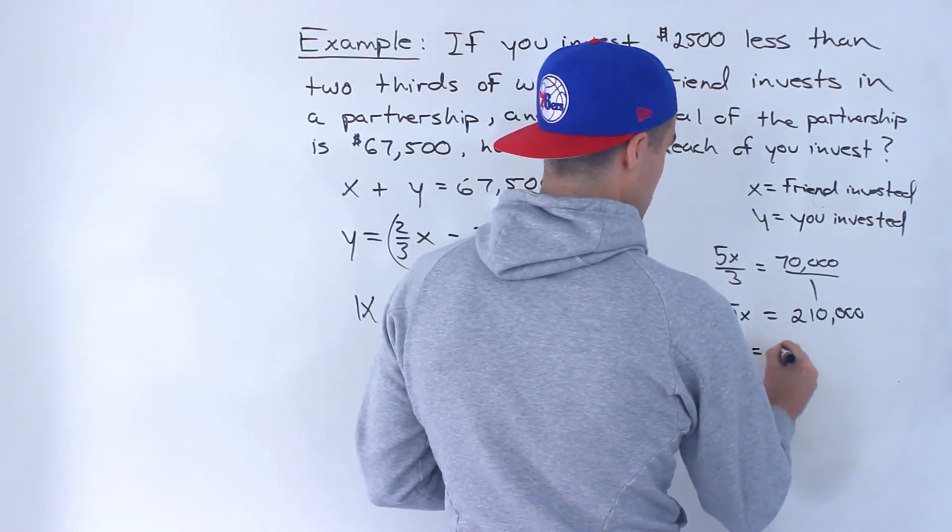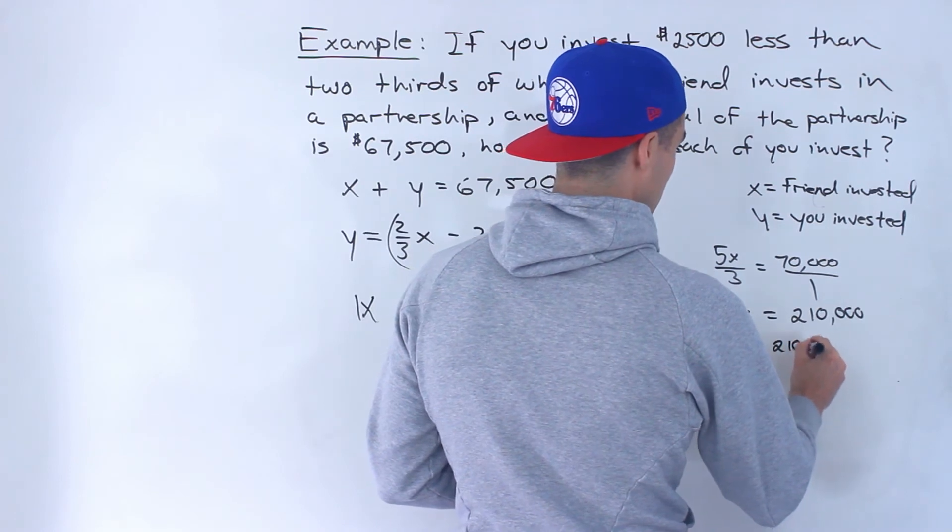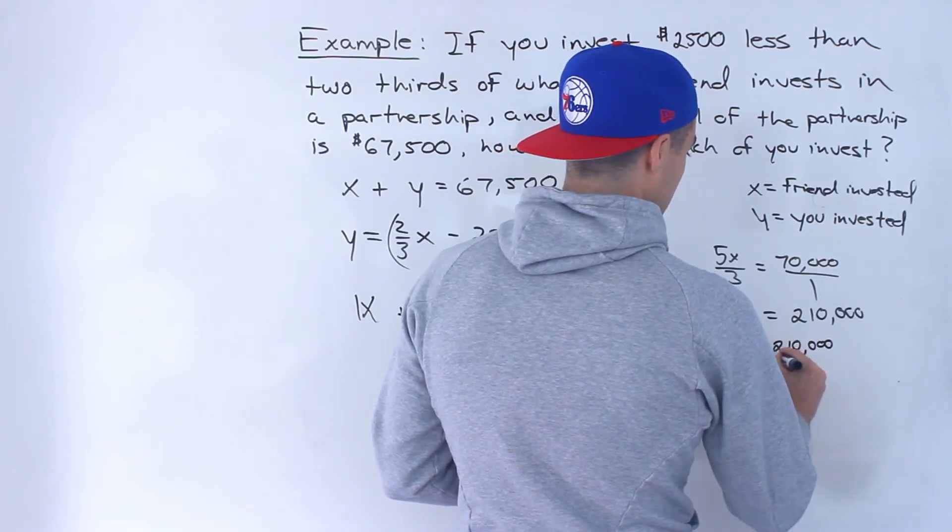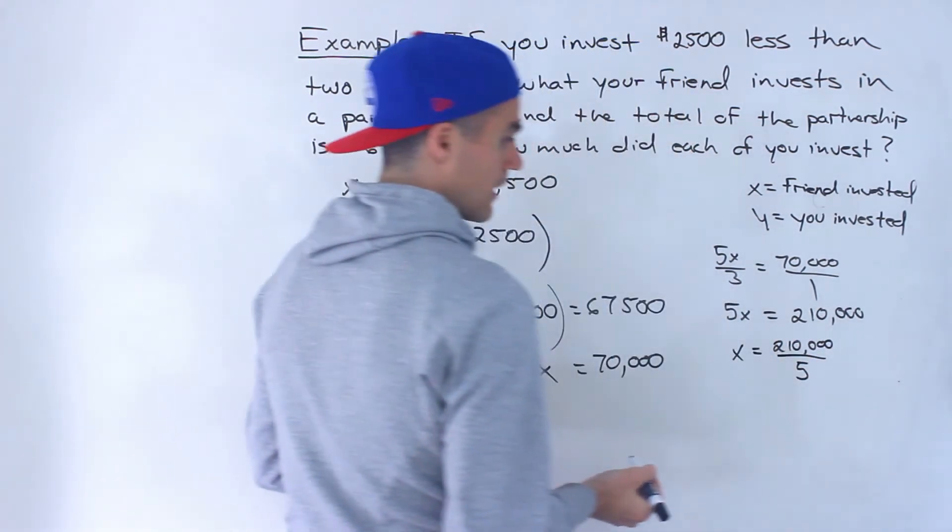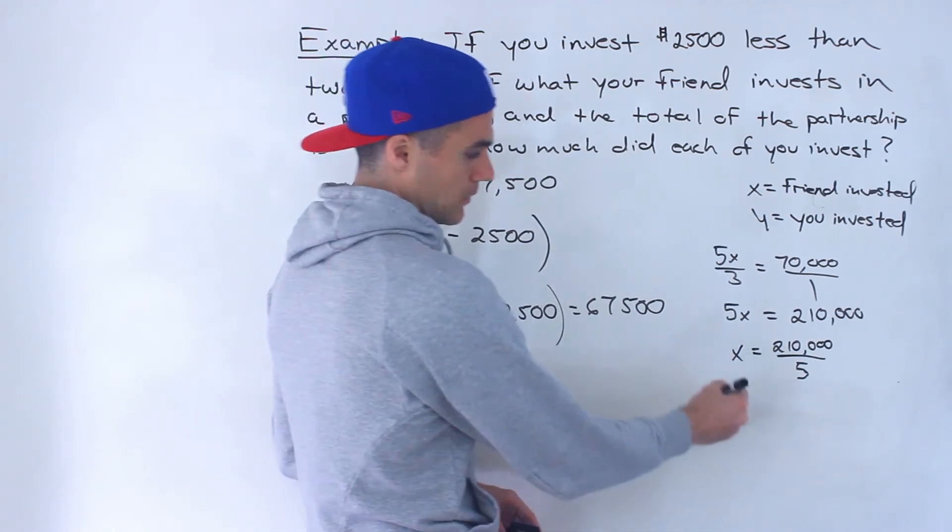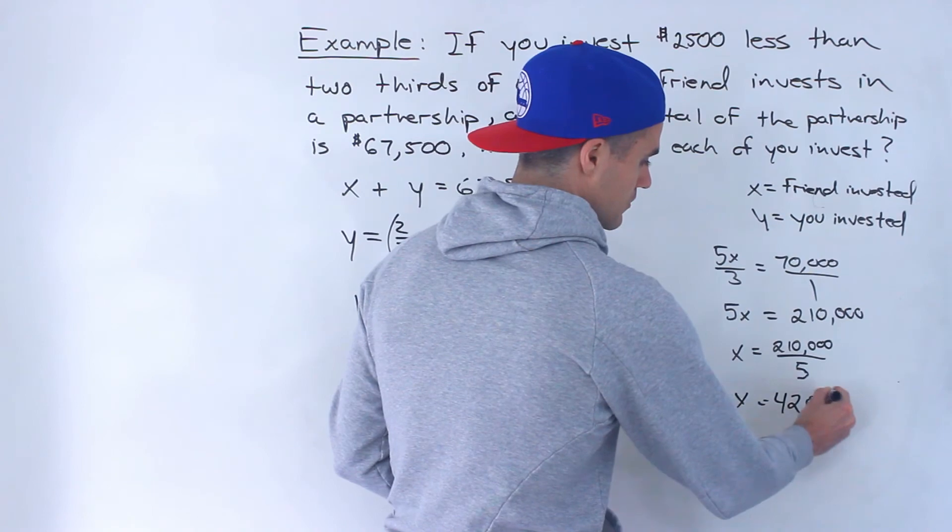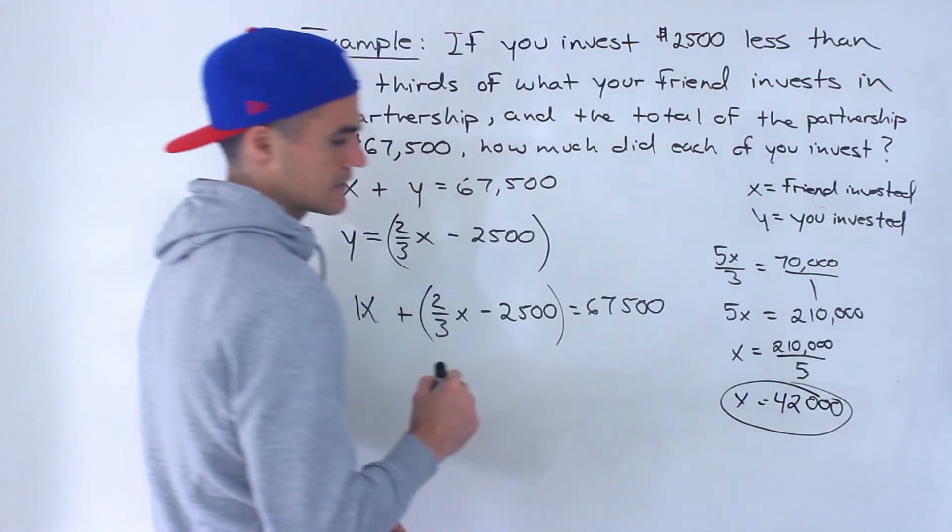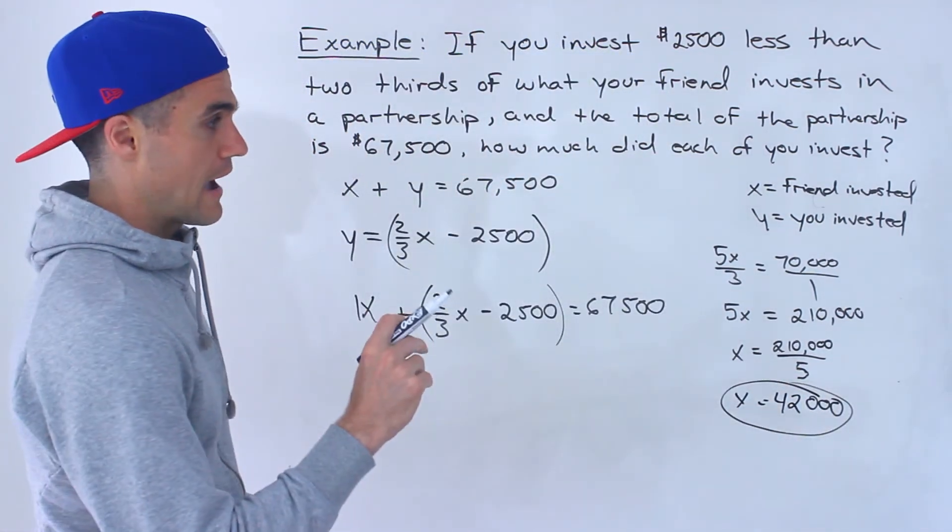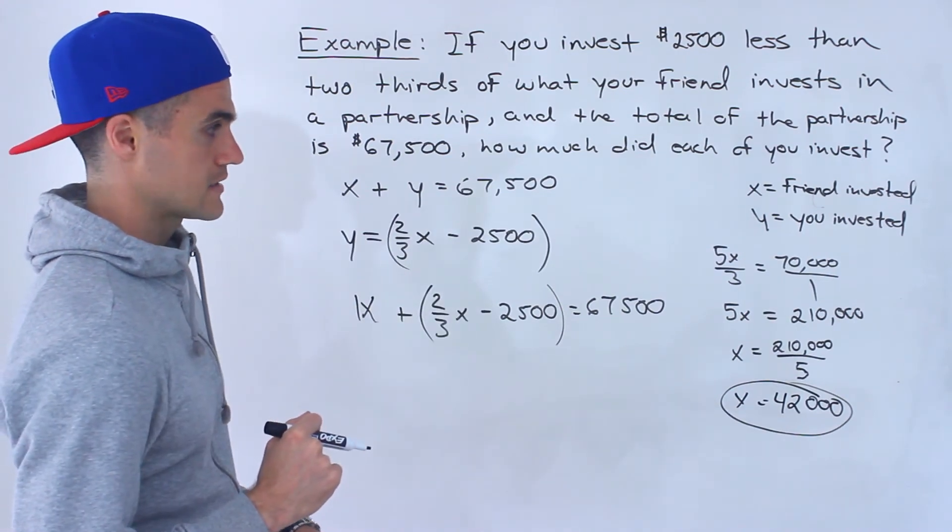And then notice in this case, x would be 210,000 divided by 5. And then when we do this here, we would end up getting x equaling 42,000. So that's the amount that your friend invested.